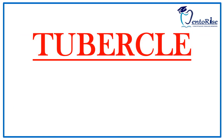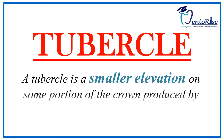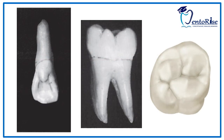Coming to the last landmark — the tubercle. A tubercle is a smaller elevation on some portion of the crown produced by extra formation of enamel. In the figures, we can notice how extra formation of enamel forms an elevation, and this kind of elevation is called a tubercle. Observe the circles marked in red.